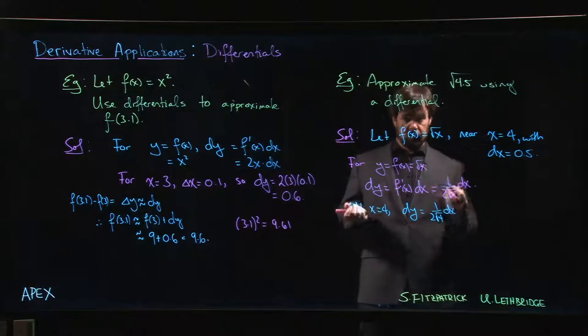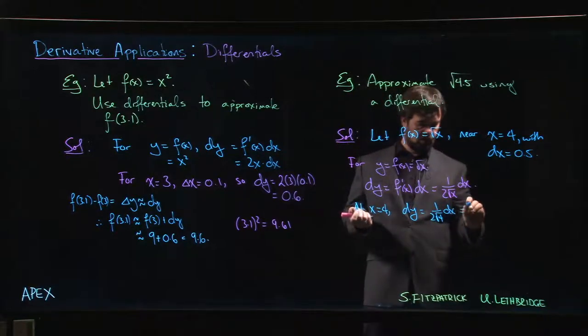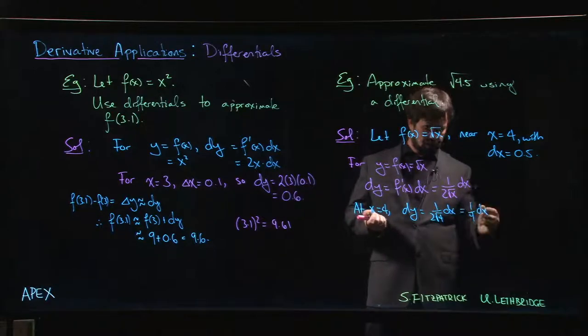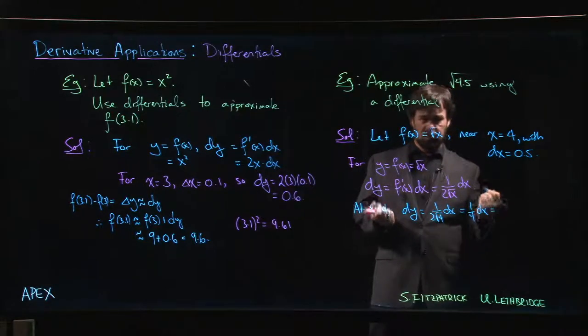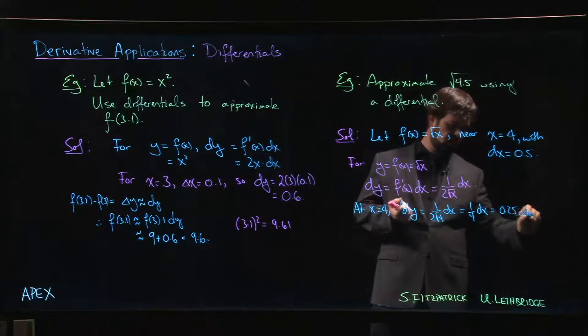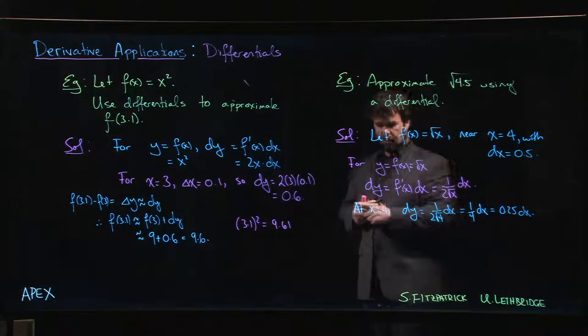So square root of 4 is 2, 2 times 2 is 4, so this is 1 quarter dx, or if you like, because we're going to be doing decimal approximations, maybe you want to write that as 0.25 times dx.